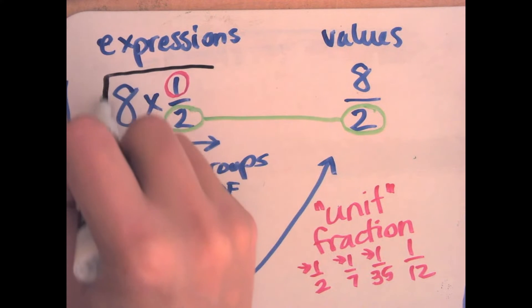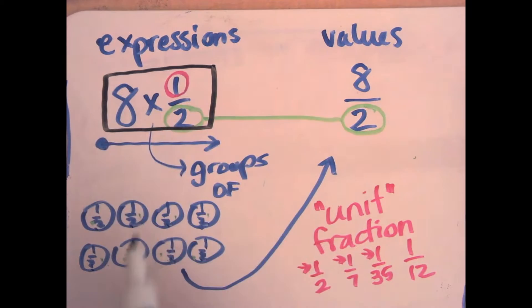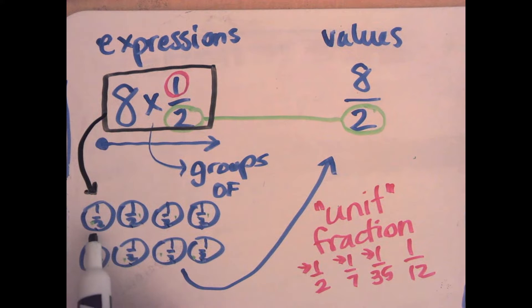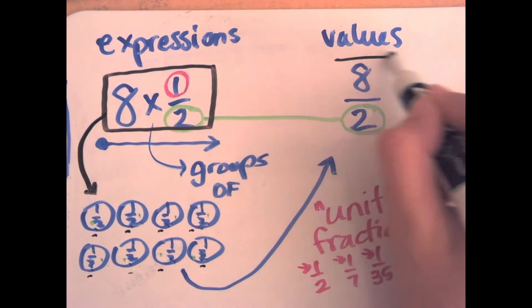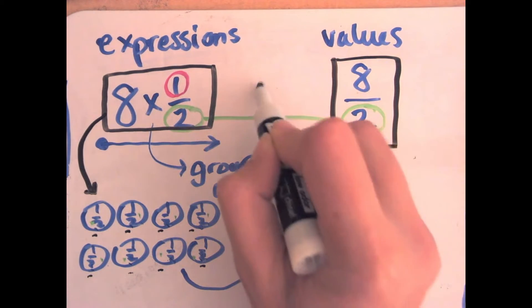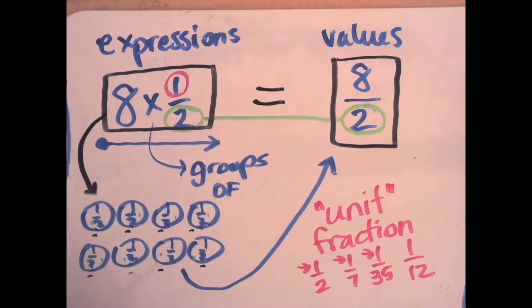So when you have eight groups of one half as an expression, you count out the halves: one half, two halves, three halves, four halves, five halves, six halves, seven halves, eight halves. This becomes the value of your expression. You can give it an equal sign, turn it into an equation, and the value is eight halves. That is really the crux — the whole of what we have been doing this week in class.